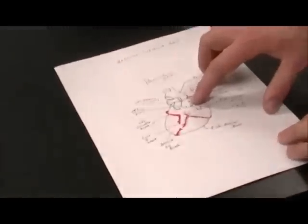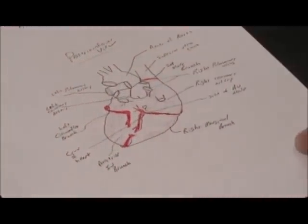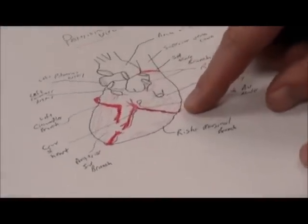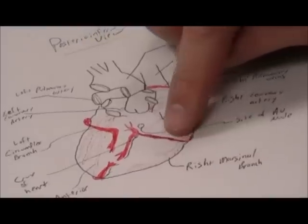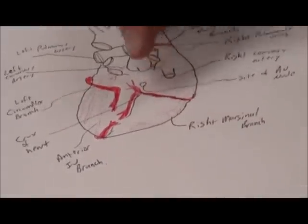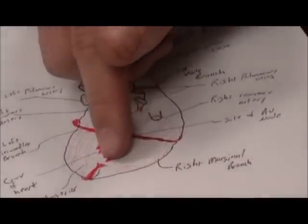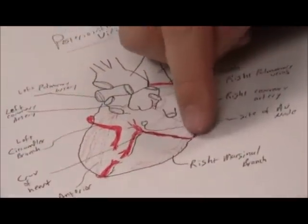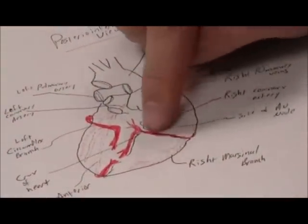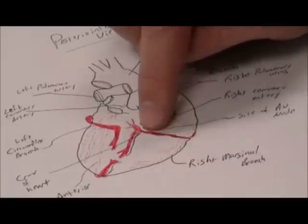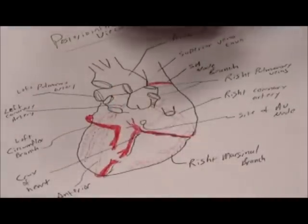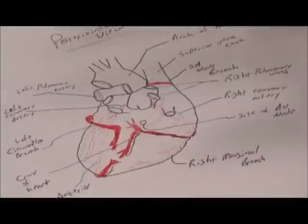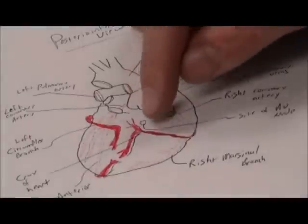Continuing with the right coronary artery: it wraps around the right AV groove and eventually travels along what's called the crux of the heart, where it forms a descending branch. This posterior portion of the artery then supplies the backside of the right ventricle and then descends along the posterior aspect of the interventricular septum. So the right coronary artery supplies pretty much the entire right side of the heart.